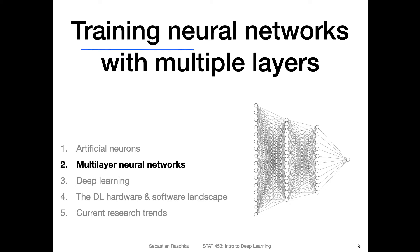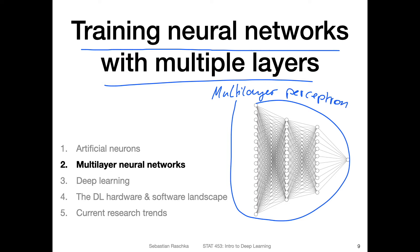Alright, let's now talk about training neural networks with multiple layers. So here on the right hand side, I'm showing you a so-called multilayer perceptron, which is sometimes also called a feed forward neural network. And it is also a fully connected neural network.